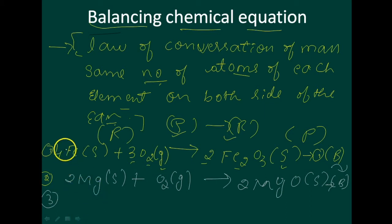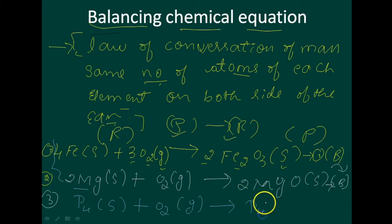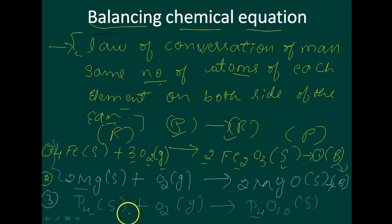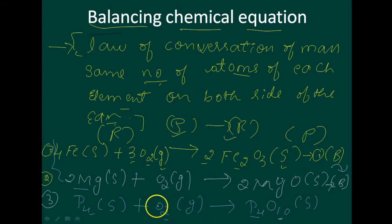Now I will write an equation — please identify whether this is balanced or not. P₄ plus oxygen gives P₄O₁₀. Consider that P has 4 atoms on both sides, so that is okay. But for oxygen, the product side has 10 and the reactant side has only 2. So to balance, you multiply the oxygen by 5, giving a balanced chemical equation. In an examination they will ask you to convert an unbalanced equation into a balanced one.